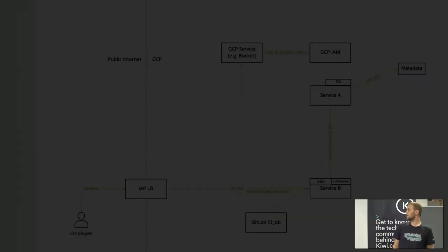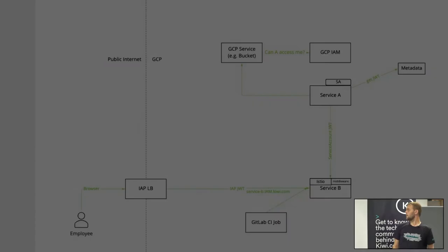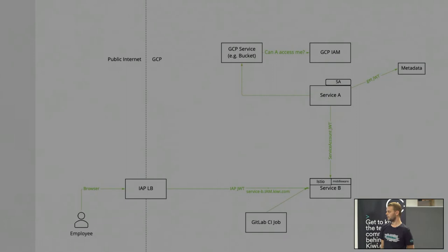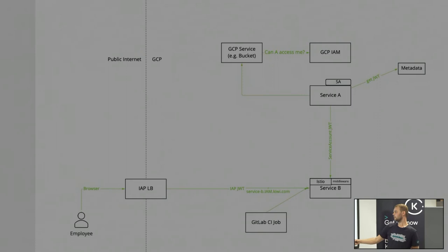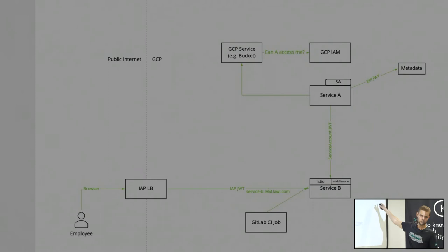Another example: you have a GitLab CI job running on your dedicated runner — for us, in GCP. The GitLab CI job has a token and an identity. You just configure: trust tokens from accounts.google.com, trust tokens from IAP, and trust tokens from your GitLab. GitLab generates a JWT token for any CI job automatically. You just pass the token — that's it, nothing else to do, and it works.